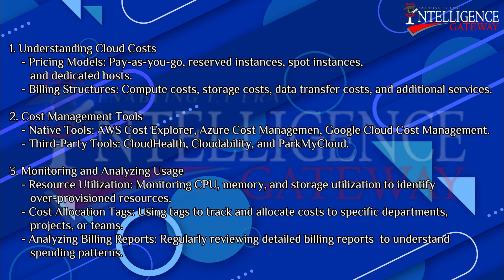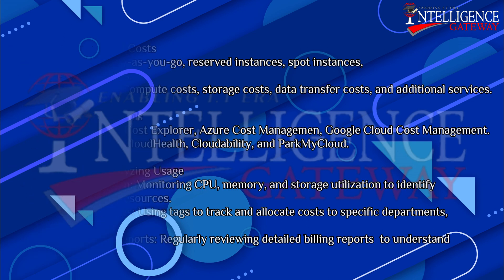Monitoring and Analyzing Usage: Resource utilization involves monitoring CPU, memory, and storage utilization to identify over-provisioned resources. Cost allocation tags are used to track and allocate costs to specific departments, projects, or teams. Analyzing billing reports involves regularly reviewing detailed billing reports to understand spending patterns.